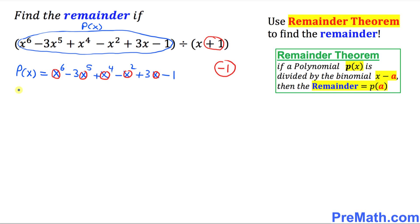So our next step is going to be p(-1) equals to, so wherever you see x replace it by negative one. (-1)^6 minus 3 times (-1)^5 plus (-1)^4 minus (-1)^2 plus 3 times (-1) minus 1.